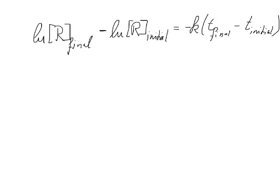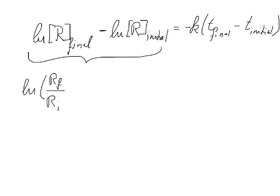This is the general solved equation for the rate equation for a first-order reaction. We can write this in slightly different forms using the rules of logarithm: ln of R_final divided by R_initial equals minus k times T_final minus T_initial.